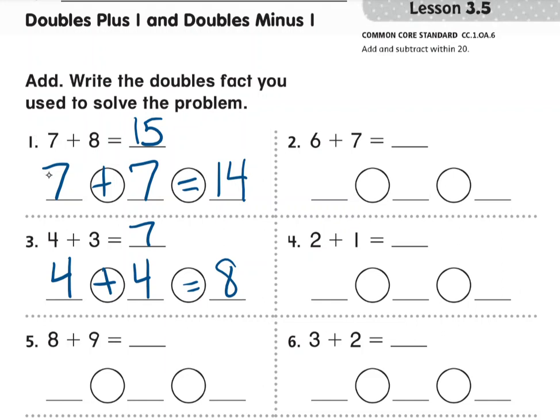So for this one we used 7. 7 plus 7 is 14. That's a doubles fact, but I had to add 1 to make 15. On this one, 4 plus 3, we did 4 plus 4 equals 8, but we had to subtract 1 to find the sum of 7. And that's how you do doubles plus 1 and doubles minus 1.